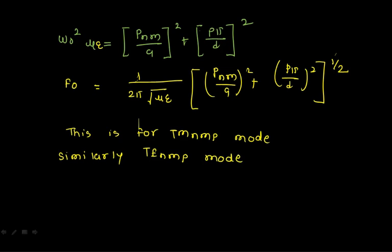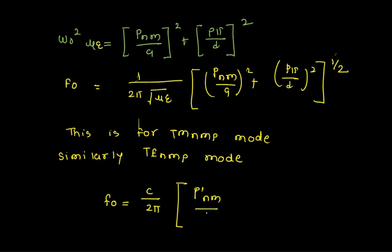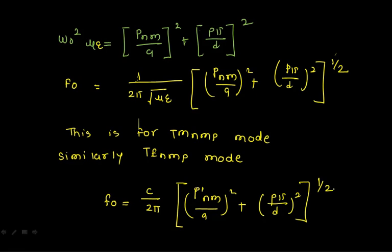For the TE mode of the circular cavity resonator, the resonant frequency is: f₀ = (c/2π)·√[(X'_nm/a)² + (pπ/d)²], where X'_nm are the roots of the derivative of the Bessel function. These are the resonant frequency expressions for both rectangular and circular cavity resonators. Next, we look at applications of the cavity resonator.